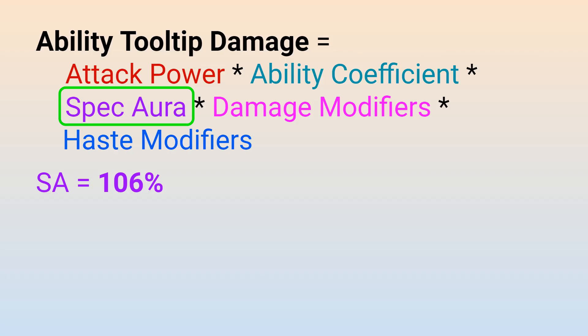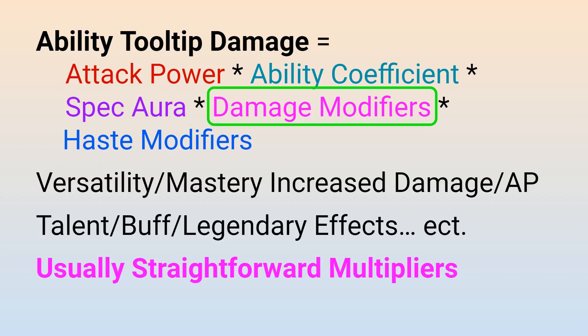So with our spec aura modifier in hand, let us talk about the third modifier, the Lumped Damage modifier. I'm using this as a catch-all term for any and all increased damage effects that are directly increasing ability damage. This can include the increased damage and healing effect from versatility, increased damage or attack power from mastery, talents, buff effects, legendary effects, or any other effects that affect ability damage. While these damage multipliers exist in many forms, it isn't too complicated to figure out how they impact our overall ability damage, since they are all straightforward multipliers.